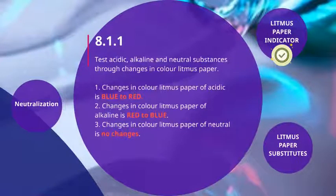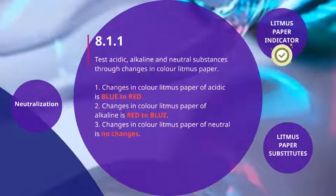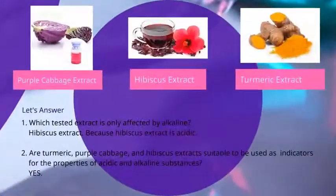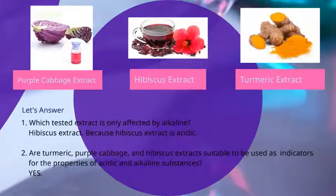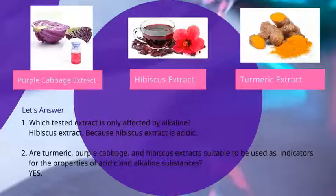Litmus paper substitutes: if you don't have litmus paper at school or nearby, you may use these substitutes to investigate whether a substance is acidic or alkaline. There are three extracts that can be used: the first is purple cabbage extract, the second is hibiscus extract, and the third is turmeric extract.